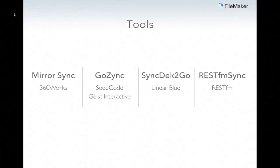I have four third-party sync tools here. We have Mirror Sync by 360 Works, GoSync by Ccode and Geist Interactive, SyncDeck to Go from Linear Blue, and REST FM Sync, built on top of the REST FM platform. I want to spend a little time talking about Mirror Sync and GoSync. Even within the tools, they try to solve syncing in different ways.